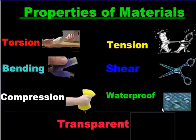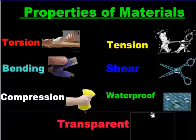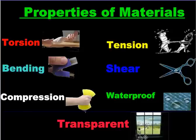Waterproof — that's when the material doesn't suck up water. The water stays on top of that material, and oftentimes it'll form little bubbles that just kind of sit on top of the material. If the material gets soggy and it sucks up the water and turns squishy, kind of like paper when it gets wet, then it's not waterproof. Transparent — that's a grade 2 word. It means when the light can go through the object so that you can see on the other side, like windows.